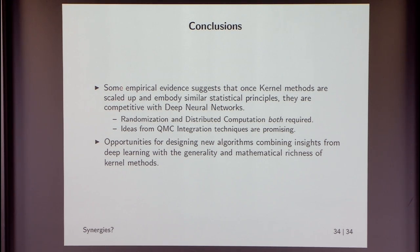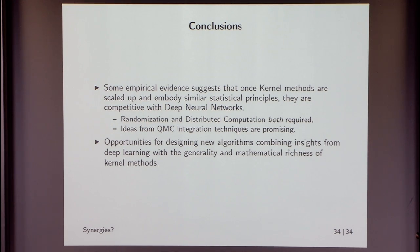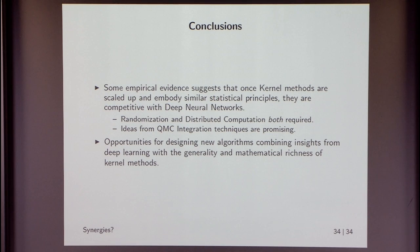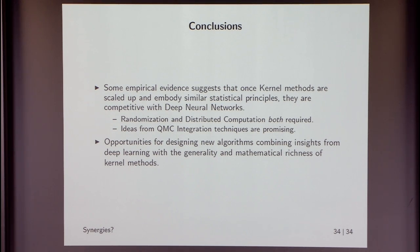To conclude: some empirical evidence suggests that once you scale kernels and embody the same statistical principles as in demonstrations of deep learning, you get competitive results. It is important to combine randomized low-rank approximations with distributed computation — doing one without the other is not enough. We explored QMC integration ideas with very promising results but haven't yet explored applicability at large scale. There are opportunities for new algorithms combining insights from deep learning with the mathematical richness of kernel methods.